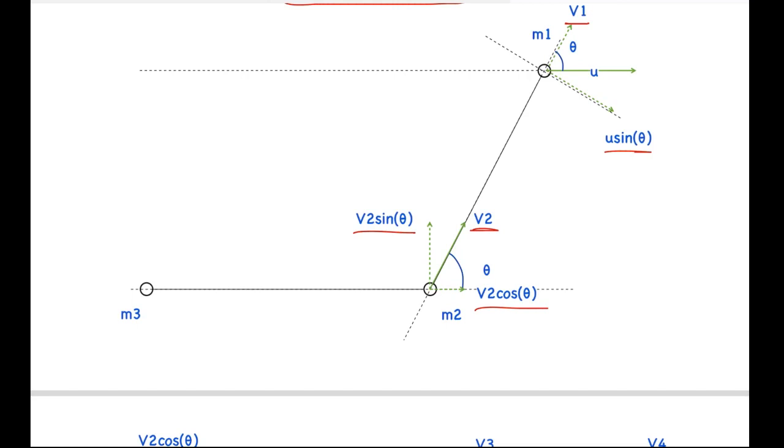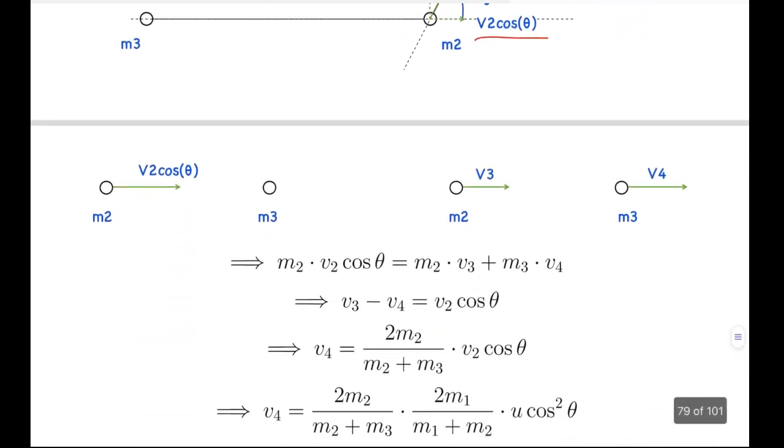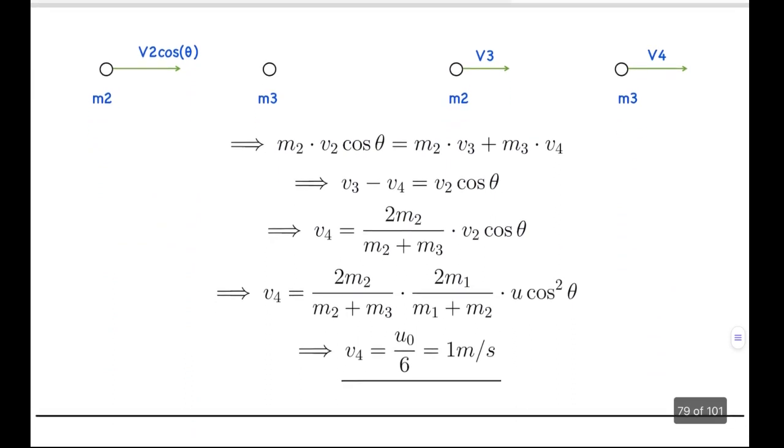Again considering a collision between m2 and m3 as shown below, we can consider that m2 is approaching with a velocity v2 cos theta and it collides with m3. After that, m3 goes on with a velocity v4 and m2 with v3. Again conserving momentum we get this equation, and again by coefficient of restitution equal to 1 we get the second equation. From here, on solving just as we did in the first case, it will be v4 equal to 2m2 by (m2 + m3) times v2 cos theta.